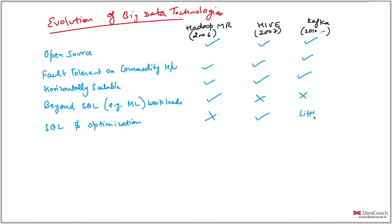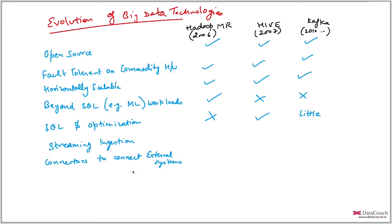Another factor why Kafka was preferred: in 2015-2016, Kafka released support for streaming ingestion and connectors to connect to external systems — a vast library of connectors without any coding. Hive does not have streaming ingestion, Hadoop MapReduce does not have streaming ingestion. Similarly, there are no connectors in MapReduce and no connectors in Hive — these were things missing in those technologies.